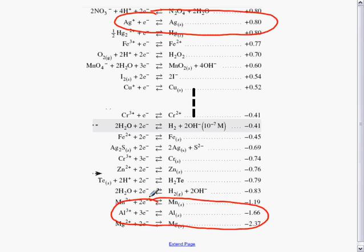Remember our trick for determining the spontaneous reactions is that they have to go reading from left to right downhill. So our reactants are going to be silver and aluminum. That means the silver reaction will be in the forward direction, so it will be our reduction, and our aluminum reaction will be in the reverse direction and it will be our oxidation.